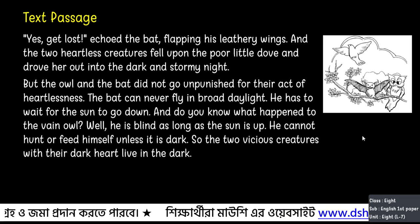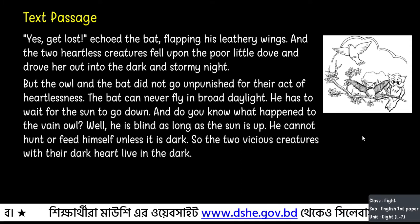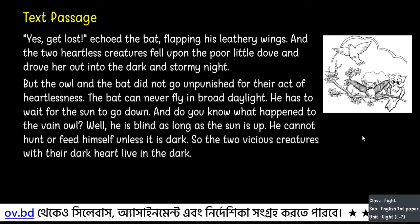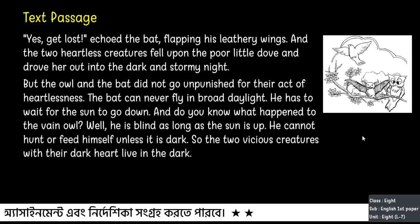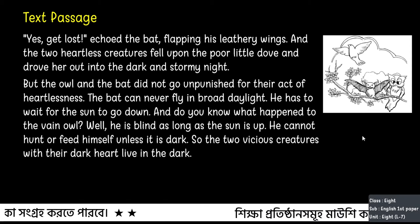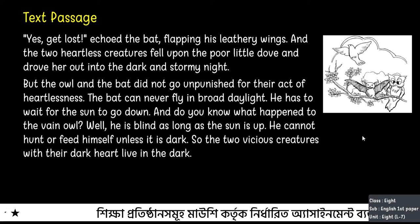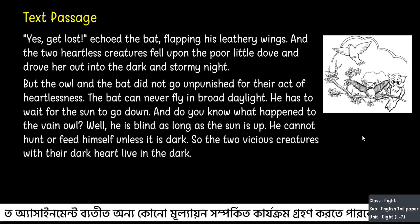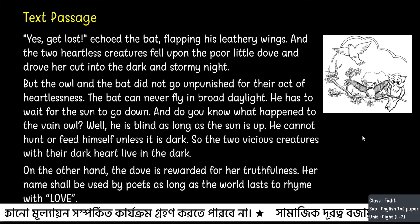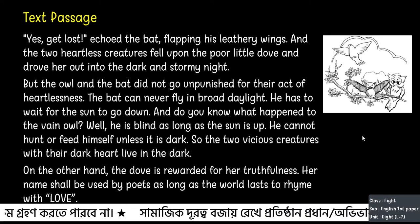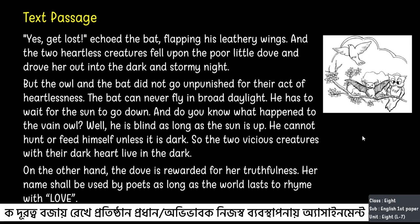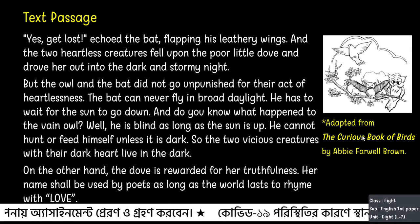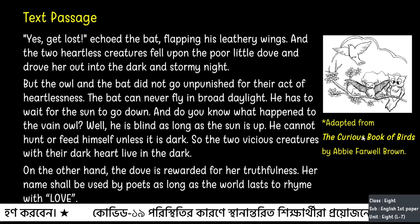But the owl and the bat did not go unpunished for their act of heartlessness. The bat can never fly in broad daylight — he has to wait for the sun to go down. And do you know what happened to the vain owl? Well, he is blind as long as the sun is up. He cannot hunt or feed himself unless it is dark. So the two vicious creatures with their dark hearts live in the dark. On the other hand, the dove is rewarded for her truthfulness. Her name shall be used by poets as long as the world lusts to rhyme with love. This story was adapted from The Curious Book of Birds by Abby Fairwell Brown.